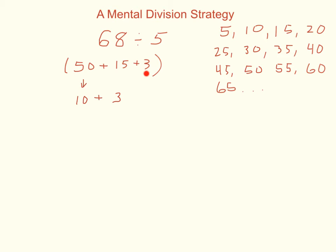Now when I get to this 3, 3 is not a multiple of 5 and I can't get any groups of 5 from 3, so that's going to be my remainder. If I have 10 plus 3 plus the remainder of 3, my answer is going to be 13 remainder 3.